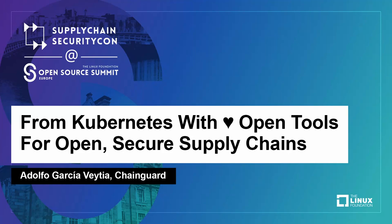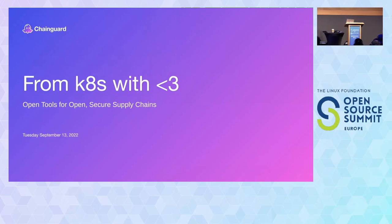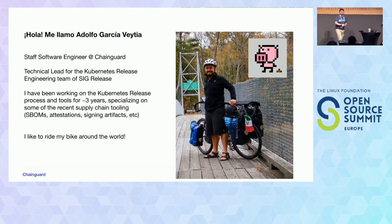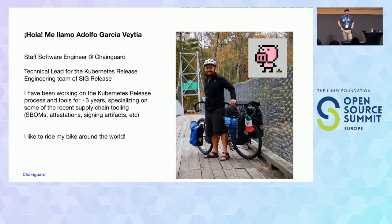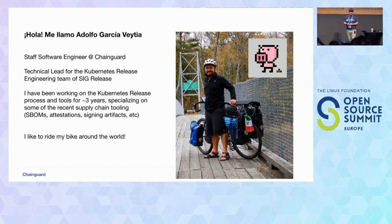Sorry for the wait, everybody. Welcome to my talk, and welcome to Supply Chain Security Conference. My name is Adolfo Garcia. I am a software engineer with Jengard, a company trying to solve the supply chain security problem, and I am based out of Mexico City. I am also one of the tech leads with Kubernetes SIG Release. I also like to ride my bike around the world, and I'm very happy to see everybody here today.